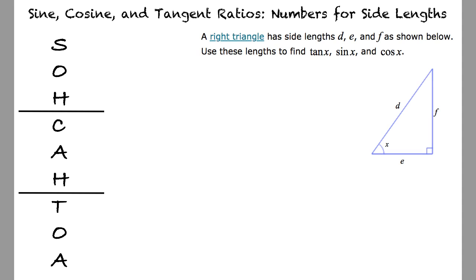A right triangle has side lengths d, e, and f as shown below. Use these lengths to find tangent of x, sine of x, and cosine of x.